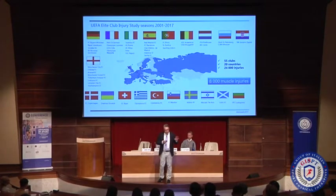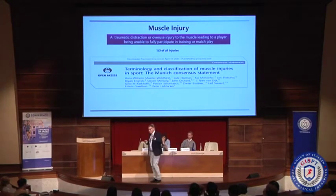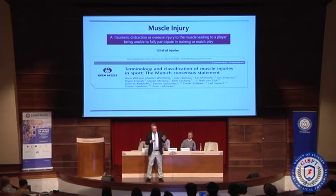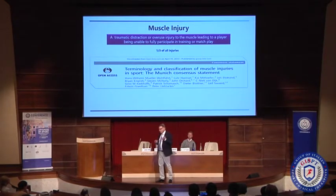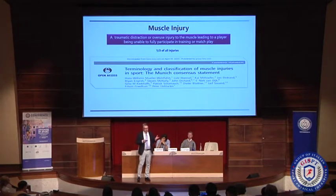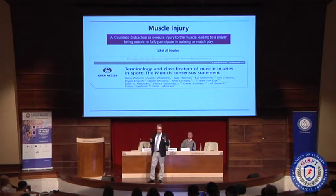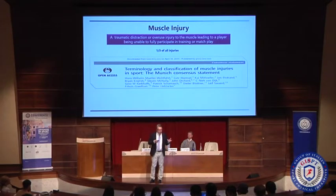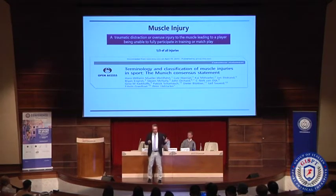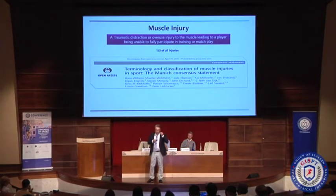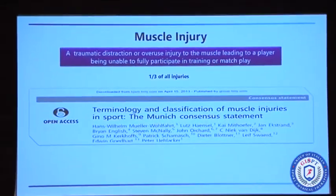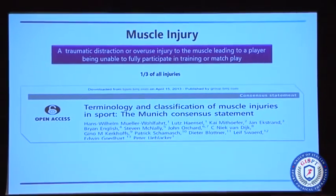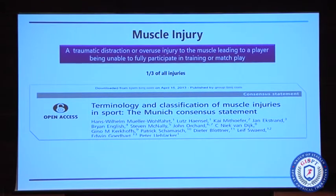I'm mainly going to talk about the Munich consensus statement about muscle injuries and classification. The question is why? Why is the consensus done? What's the reason for having a consensus? The reason is that muscle injuries are so different. There could be a difference between injuries causing absences of one to two days and injuries causing absences for many months. So if we want to treat these injuries well and predict return to play, we must classify them and compare apples to apples.